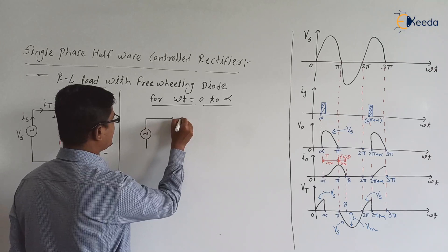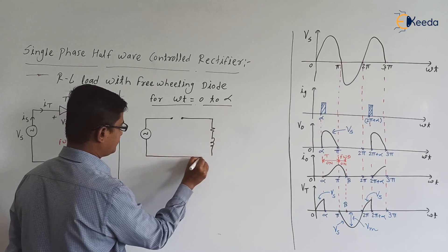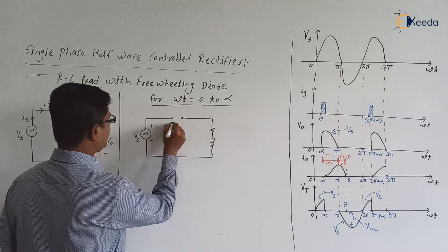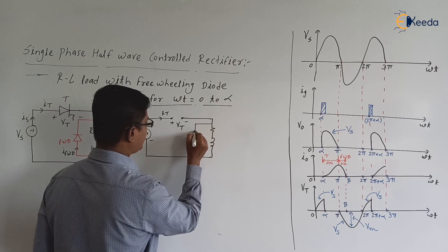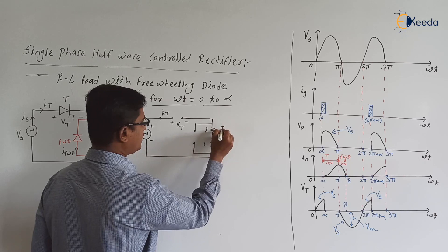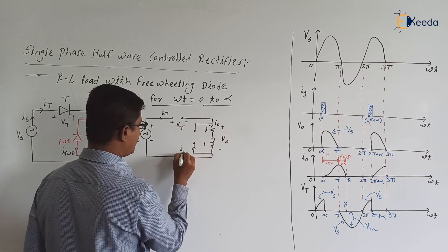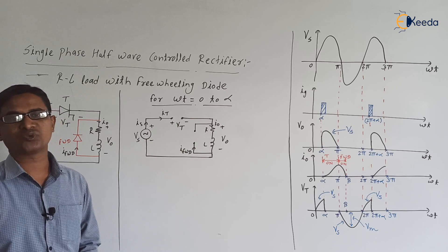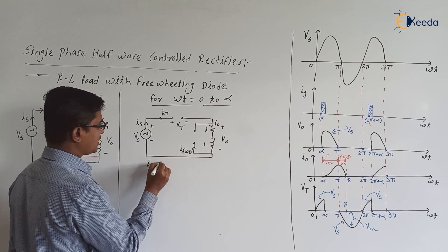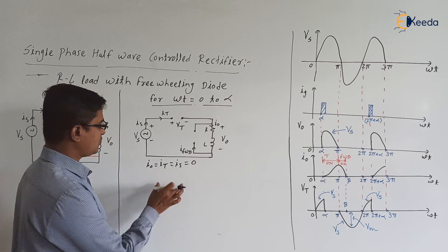Equivalently, the thyristor is in open circuit mode. Since the thyristor is in the off state, current will not flow from the source towards the load. So I0 = It = Is = 0. From 0 to α, I0 is 0.